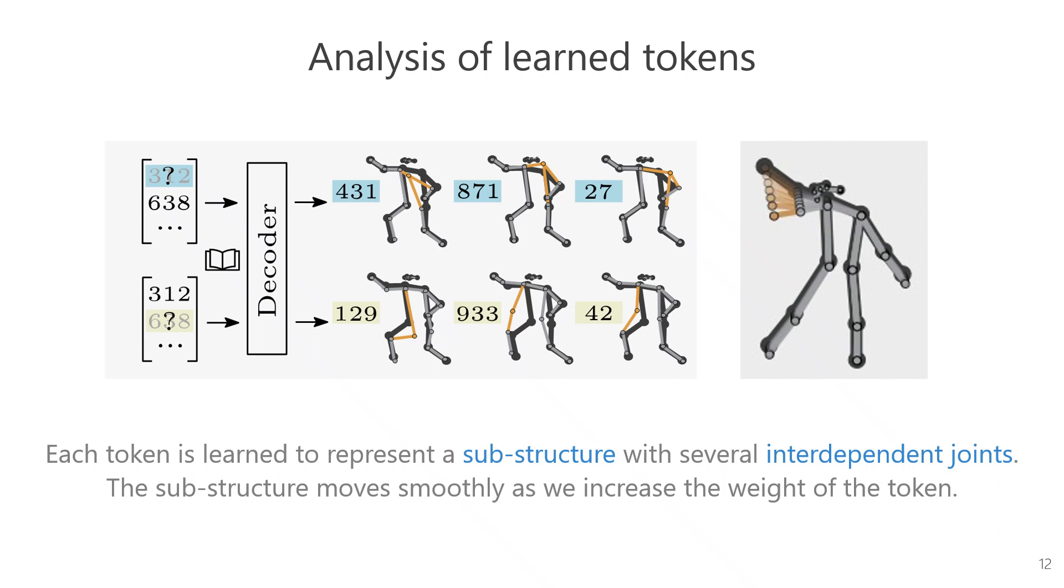In the second row, modifying the second token leads to the most significant changes in the left hip, which in turn affects the position of the left knee and left ankle. Additionally, we explore the effects of slightly increasing the weight of a particular token to observe if the changes are continuous. We observe that the corresponding substructure can smoothly move, indicating the ability to achieve lower reconstruction errors.